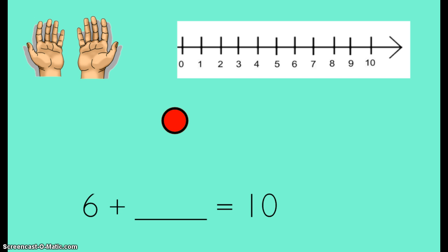On your homework sheet it asks you what is the unknown addend or what is the missing addend. 6 plus what equals 10. You could use your fingers to figure out the answer. You could use this number line to figure out the answer. Or you could use counters or something you have available at home to figure out the answer. When you know the answer, please write it on your homework sheet.